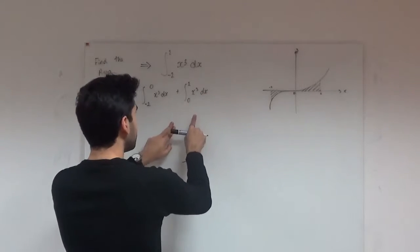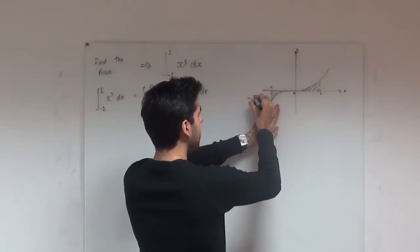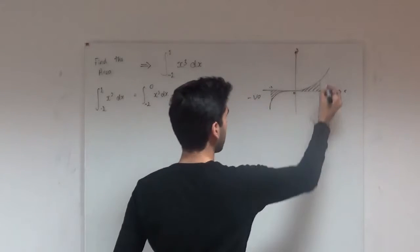Now the reason I split it up is to show you that sometimes you can get negative areas and sometimes the area can be positive.